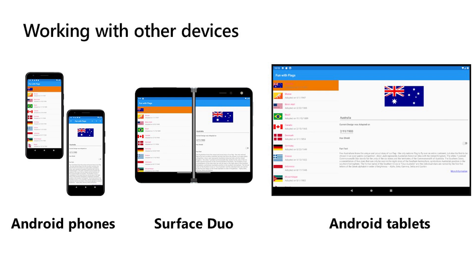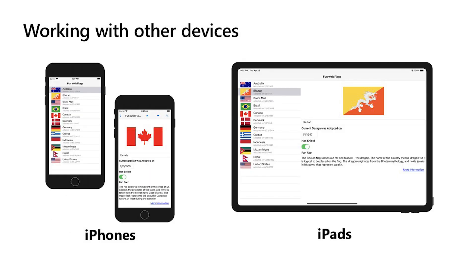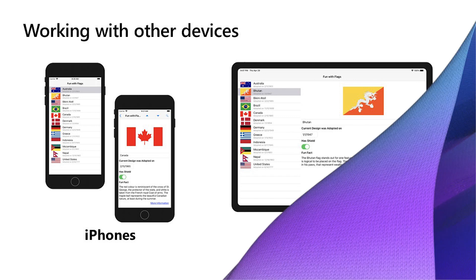But Xamarin Forms is a cross-platform framework too. Here's the same app running on iPhone and iPad. The two pane view control provides a solid foundation for both dual screen and all larger screen sizes across multiple platforms. The proportional configuration will work just as well targeting Xamarin Forms supported desktop platforms like Windows and macOS.